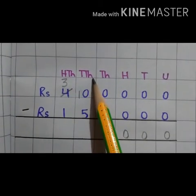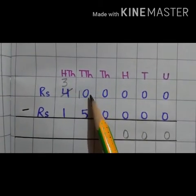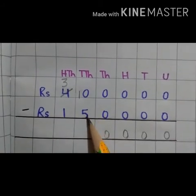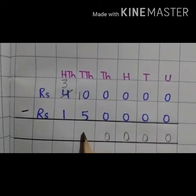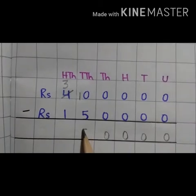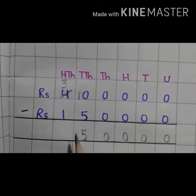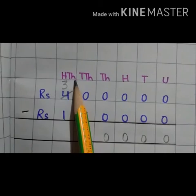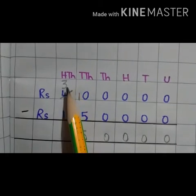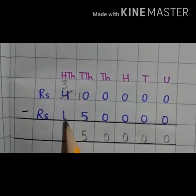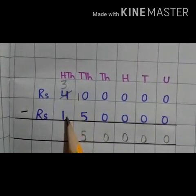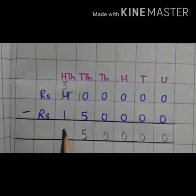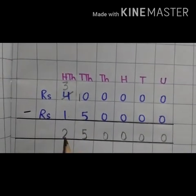Now at the ten thousand place we have 10 and 5. So 10 minus 5 is equal to 5. Write 5 in the ten thousand place. At the 100 thousand place we have 3 and 1. So 3 minus 1 is 2. Write 2 in the 100 thousand place.